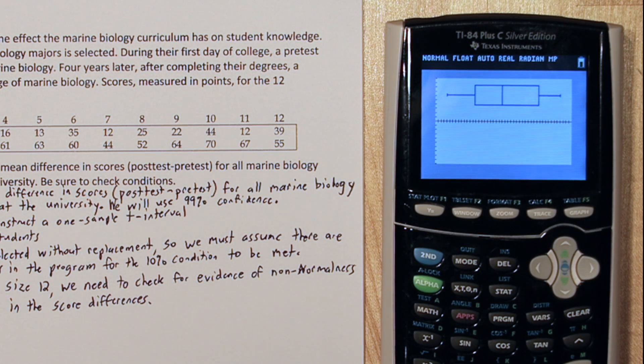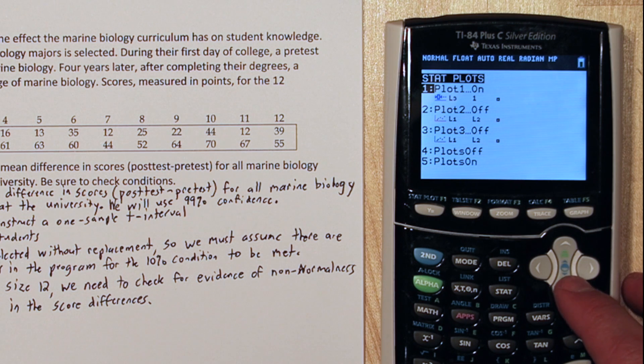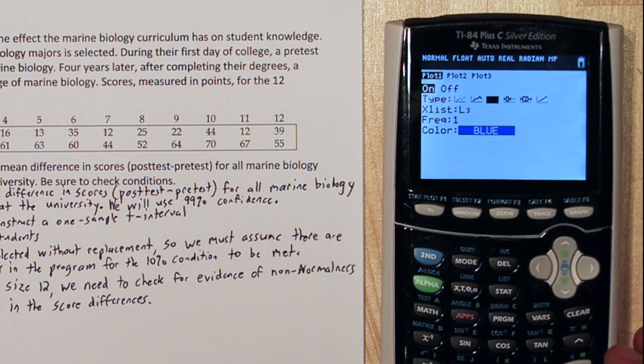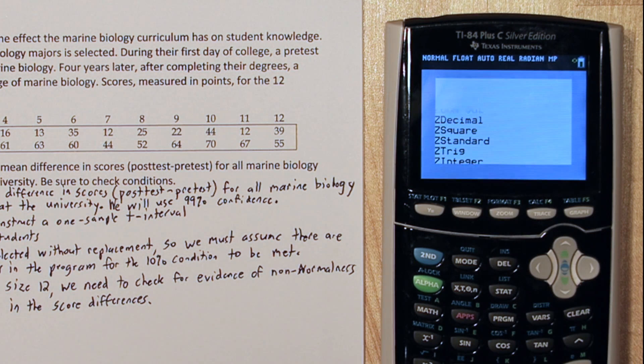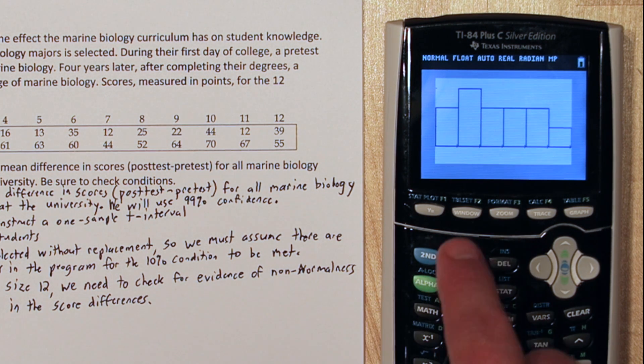Now we need to check for strong skewness. So if you press 2nd and y equals again, you can change plot 1 to a histogram, which is the third option. You can leave everything else the same, but press zoom 9. Alright, it might be a little skewed right, but as I've mentioned before, TI calculators tend to make things look skewed right. I always mess with the window settings to get a better perspective.